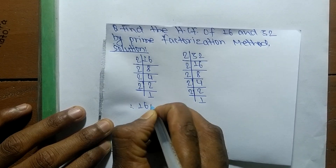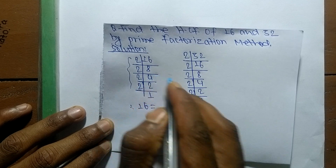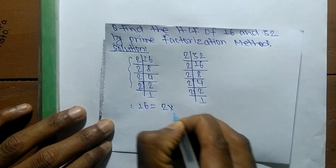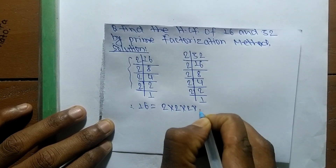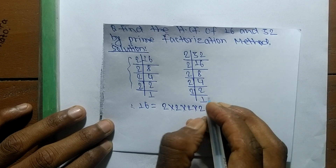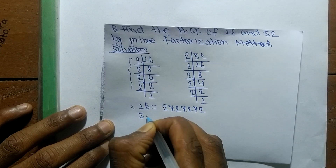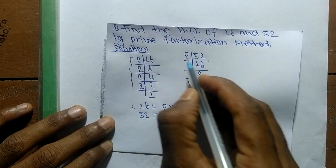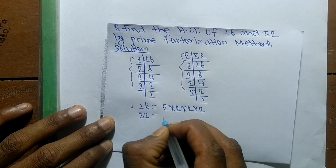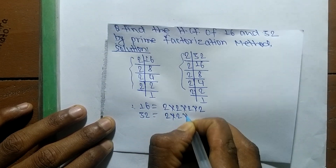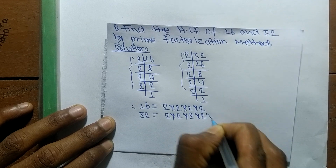From these prime factors we can write: 16 is equal to 2 times 2 times 2 times 2, and the prime factors of 32 is equal to 2 times 2 times 2 times 2 times 2.